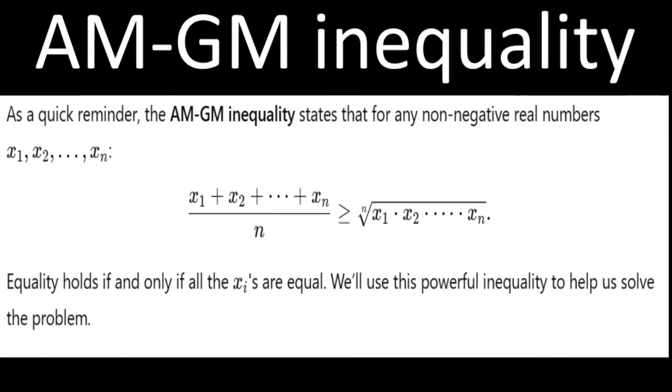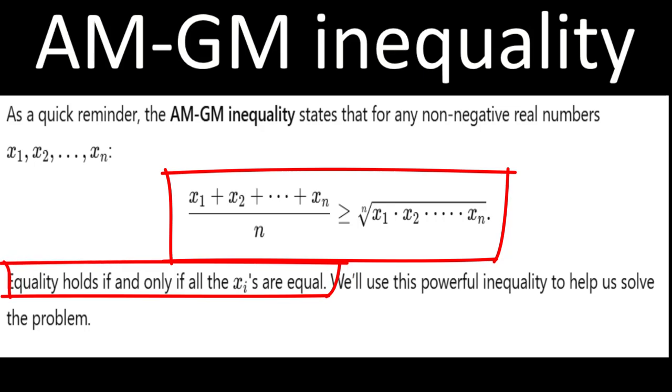We will use some algebra and the AM-GM inequality to solve it. First, let's remind ourselves of the AM-GM inequality. For any set of non-negative numbers x1, x2, and so on, up to xn, the arithmetic mean is greater than or equal to the geometric mean. Equality holds only when all the numbers are equal. We'll use this inequality to simplify and prove our result.